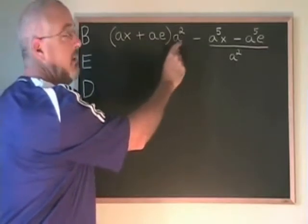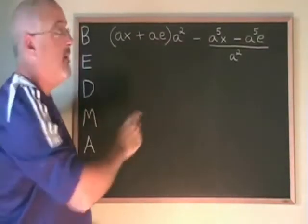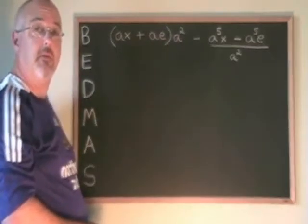Normally, the term that's been multiplied by a bracket will be written before the bracket, but if it's written after, like this, it's still a multiplication. You have to be able to recognize that.